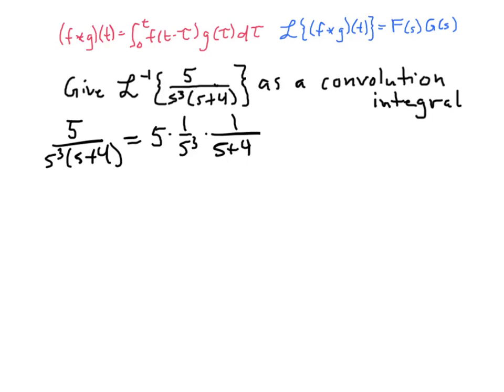We'd like to look at one over s-cubed as the Laplace transform of something, and the same with one over s plus four. Since we need a two-factorial on top for the s-cubed term, we rewrite as five-halves times two over s-cubed times one over s plus four. We think of two over s-cubed as F of s and one over s plus four as G of s.